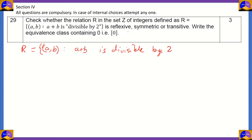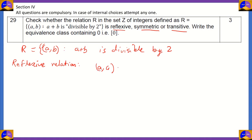To prove that a relation is an equivalence relation, you need to prove that it is reflexive, symmetric, and transitive. Let's look at reflexive first. For a reflexive relation, the condition is that (a, a) belongs to R.